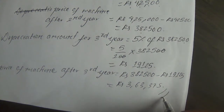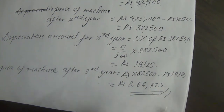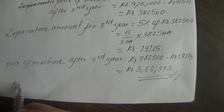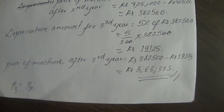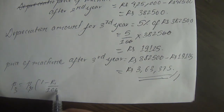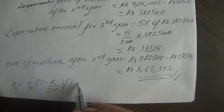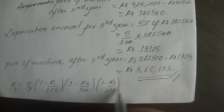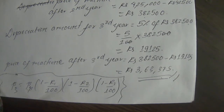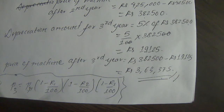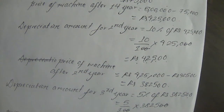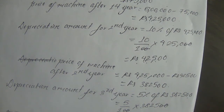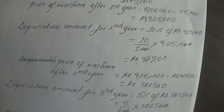The price of the machine after the third year is Rs. 3,82,500 minus Rs. 19,125, giving us the final price of the machine after three years of depreciation. Thank you.